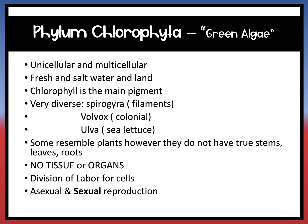The next phylum is Chlorophyta, which is green algae — chlorophyll is the main pigment. They can be unicellular or multicellular and can be found in fresh and salt water. They are very diverse; examples include spirogyra, volvox, and ulva. Some do resemble plants, but they don't have plant parts like stems, leaves, or roots, and they don't have any tissues or organs either.